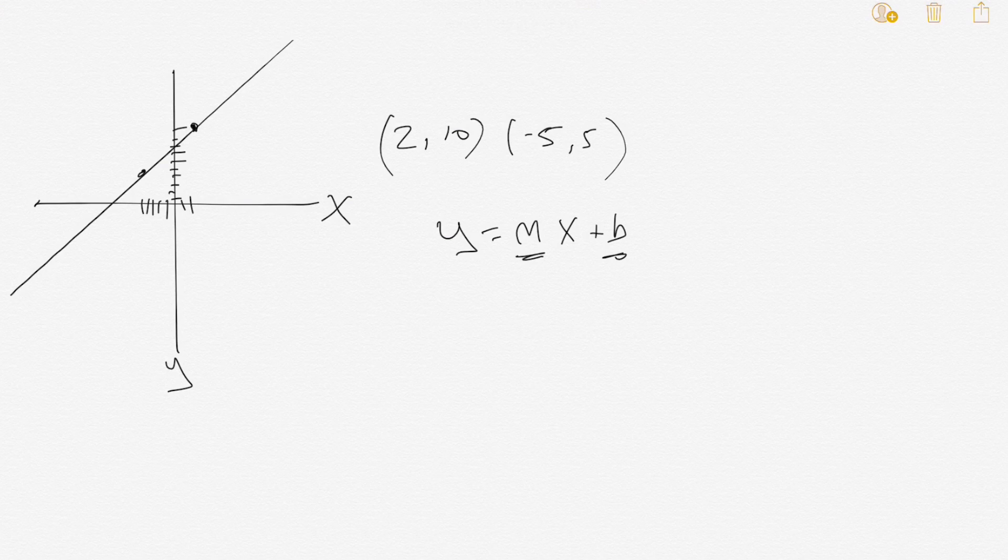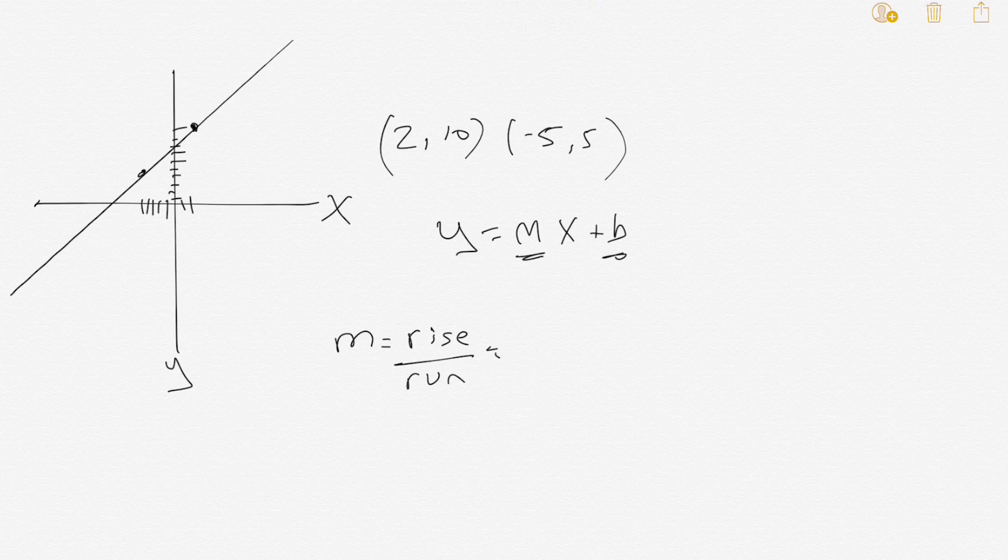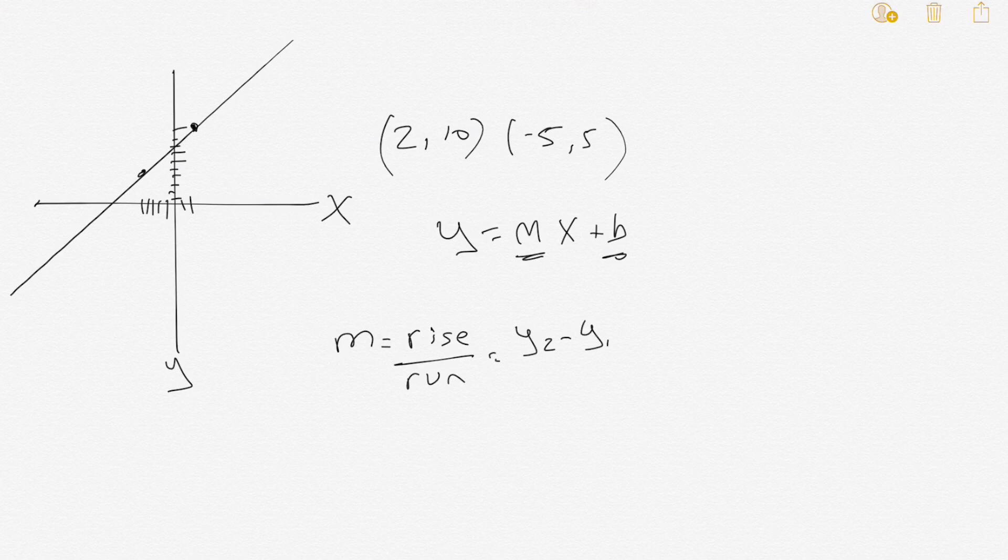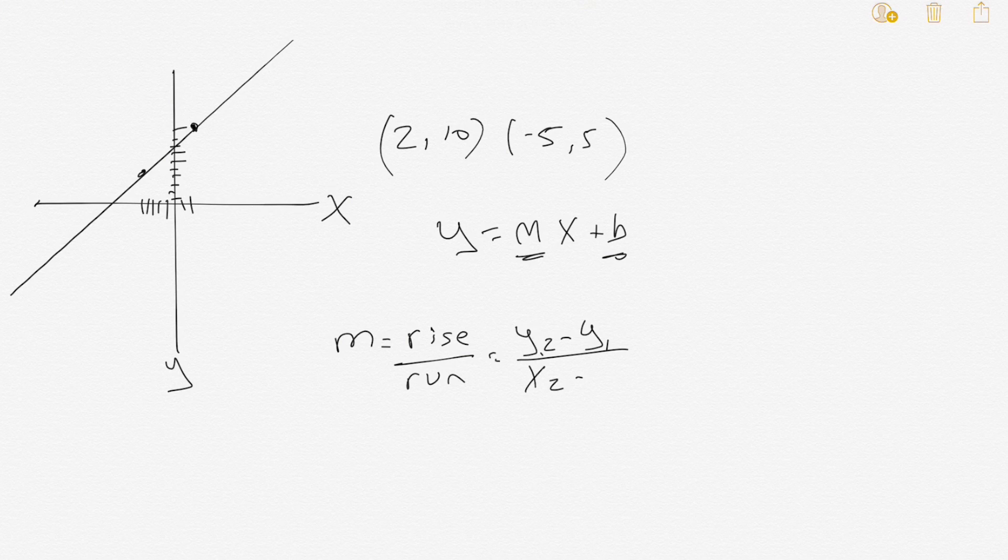The way to get the slope is m equals the slope equals the rise over the run. The rise is y2 minus y1 because it's rise which is vertical, so that's y. Over the run, the run is horizontal which is x, x2 minus x1.